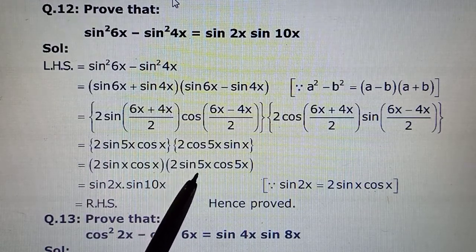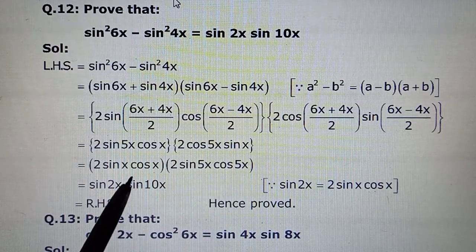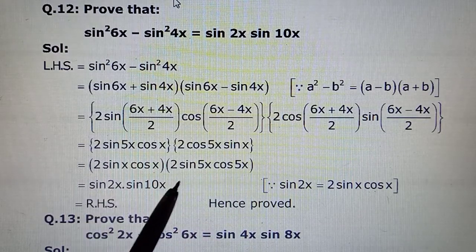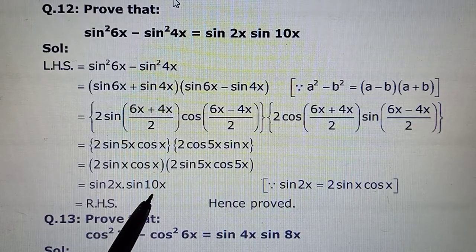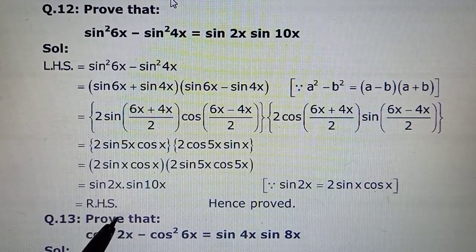We will arrange 2 sin x with cos x. Then same angle 5x and 5x were here, so we will arrange another group 2 sin 5x and cos 5x. Abhi half angle formula se sin 2x ho gaya, and this bhi double ho jayega, sin 10x ho jayega. That is what we had on our right hand side.